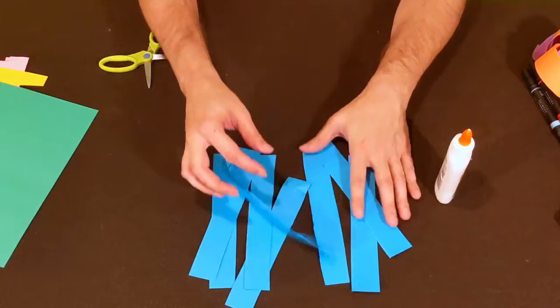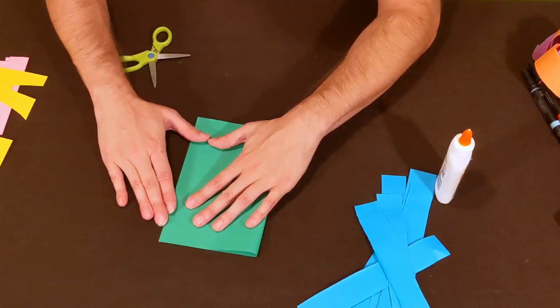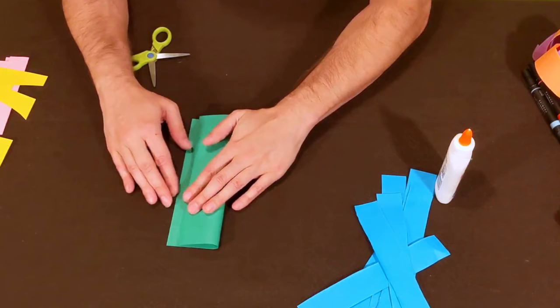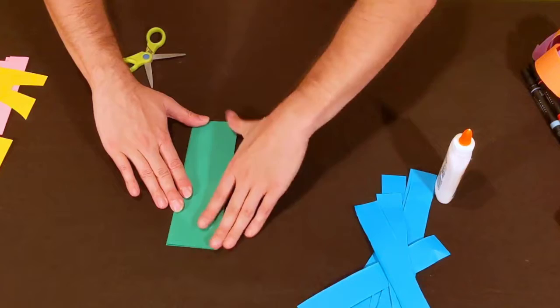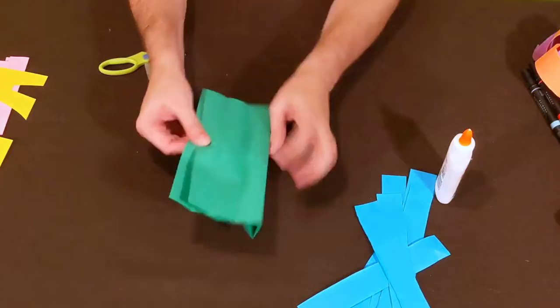All right, so now we got our strips. There's going to be little links in our snake chain. We're going to do the same thing with this other colored piece of paper. We've got a long side, our short sides. We're going to put two short sides together, fold it, put two short sides together again, and then one more time just like so.